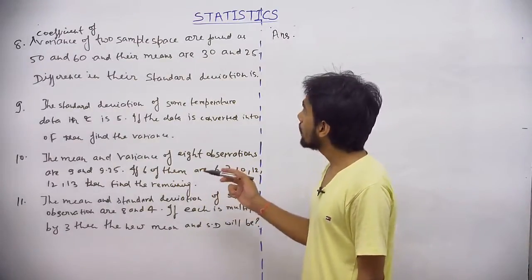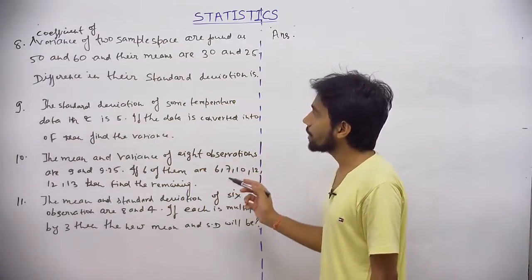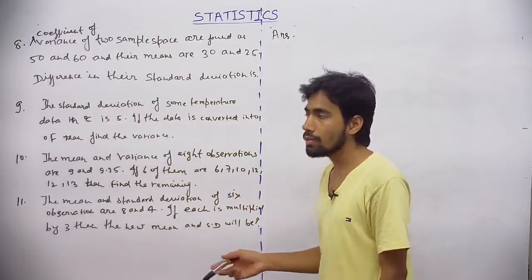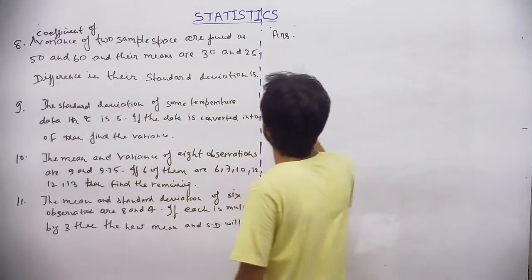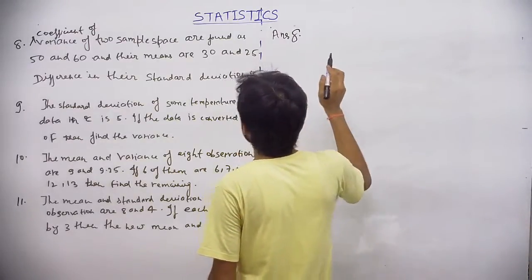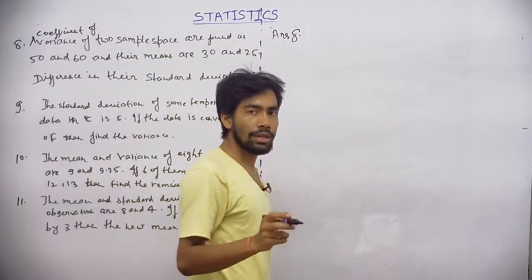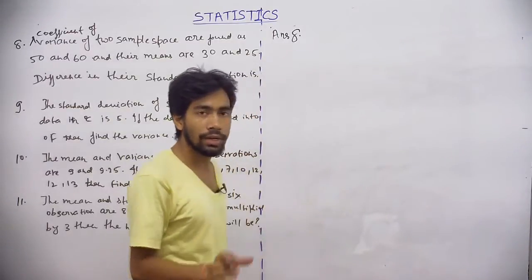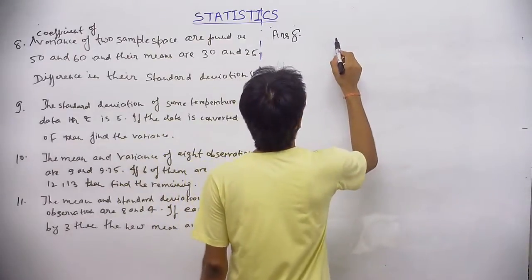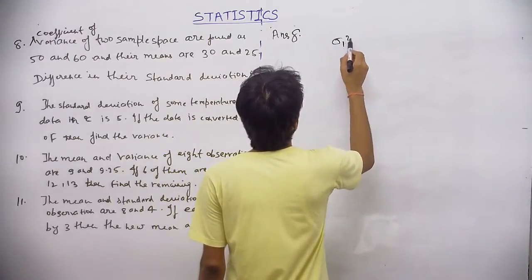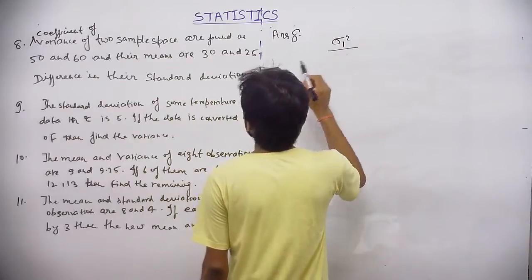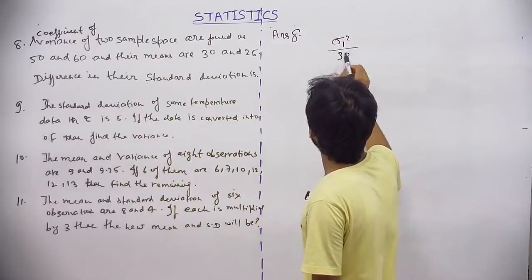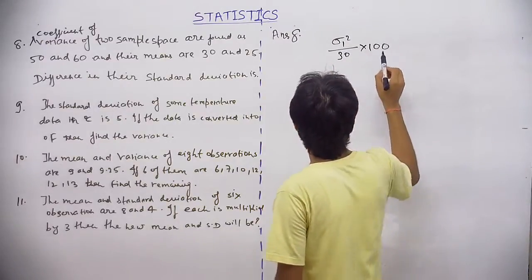Found as 50 and 60, and their means are 30 and 25 respectively. For the difference in standard deviation, we basically have to find the standard deviation. What is the formula for coefficient of variance? It is variance divided by mean into 100. So variance divided by mean - the mean of the first is 30 - into 100.